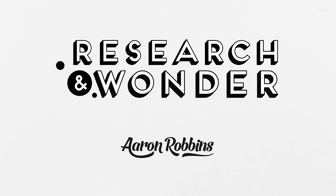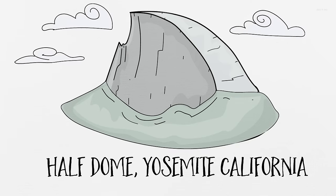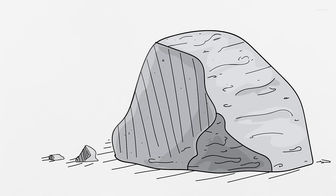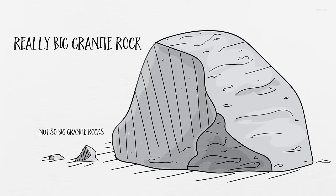Hey, my name is Aaron Robbins and you're watching Research and Wonder. Today we're going to talk about Half Dome. So let's start off by stating the obvious. Half Dome is a really big rock made up of quartz, feldspar, and a little bit of mica. Obviously, it's called granite.